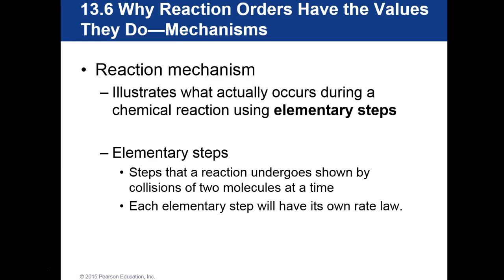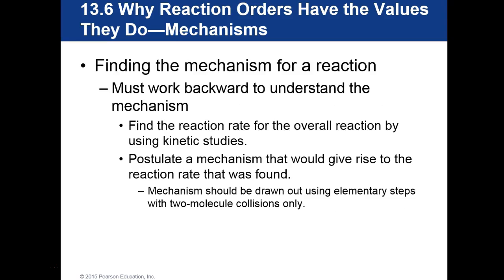The reaction mechanism illustrates what actually occurs during a chemical reaction using elementary steps — steps shown by collisions of two molecules at a time, each with its own rate law. To find the mechanism for a reaction, we work backwards: we find the reaction rate for the overall reaction using kinetic studies, then postulate a mechanism drawn using elementary steps with two-molecule collisions only.